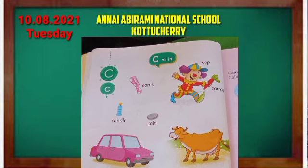So what is given? C as in. So previous class we read the A and B letter words. So today's class we read the C letter words. This is a capital C and small c. So look at the C letter pictures. So first picture — what is this? This is comb. A comb spelling is C-O-M-B. Comb.